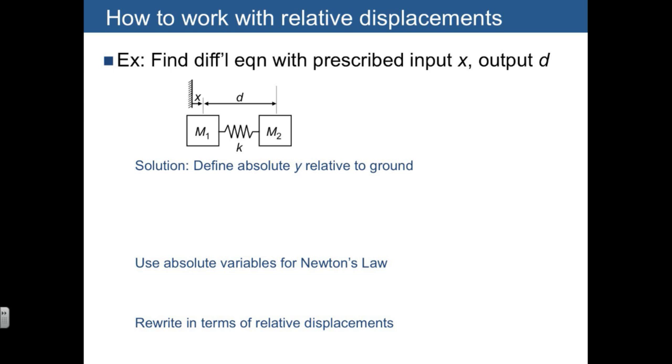So what do we mean by defining an absolute y relative to ground? Well, this second mass, we can actually measure its displacement with a new variable y that we define for our own convenience. And that allows us then to define y is just equal to x plus d. So we have a new variable that's just for our convenience.